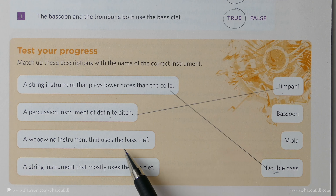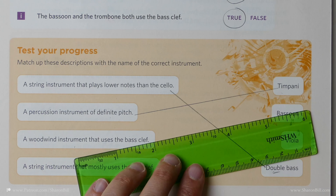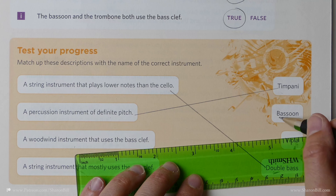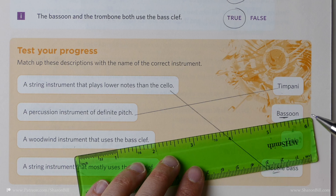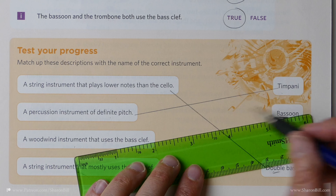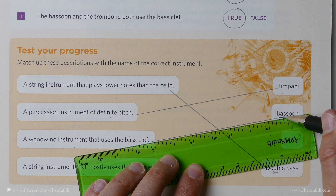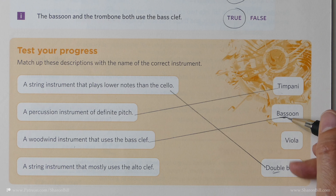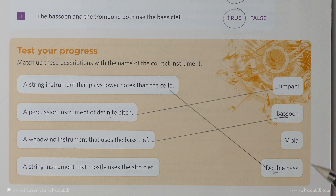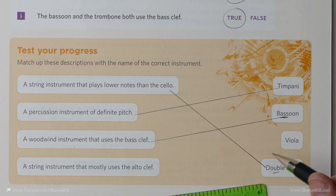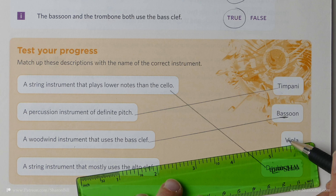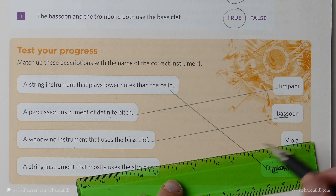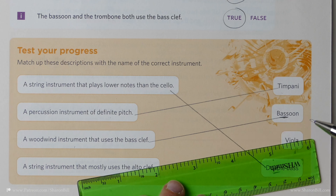Which woodwind instrument uses the bass clef? That's the bassoon — that's the bass of the woodwind family, as it were. Just a clever little coincidence there — is it coincidence? I wonder. And so we should be left with the viola as the string instrument that uses the alto clef.